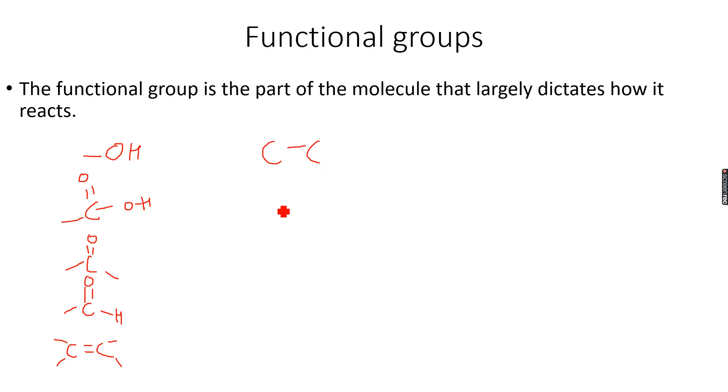And the ester group, the haloalkane groups, which can be C-Cl, C-Br, C-I, anything, but there has to be a halogen. In fact, instead of writing a specific halogen, let's write X, where X is a halogen. These are the functional groups that we will be encountering.